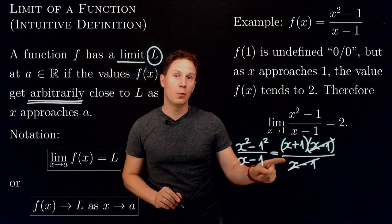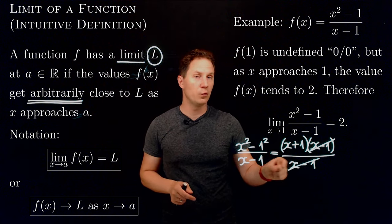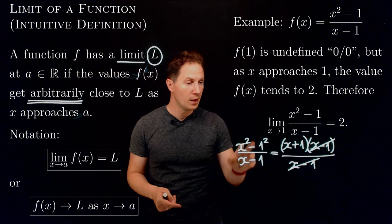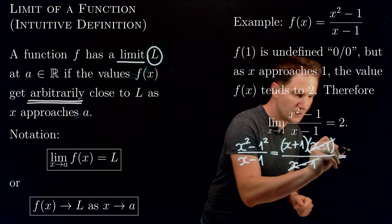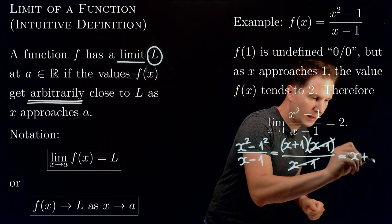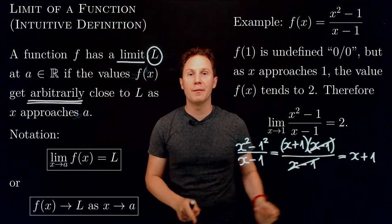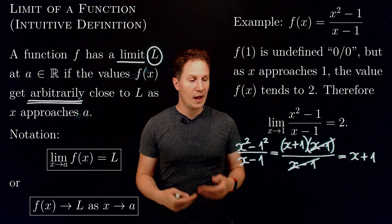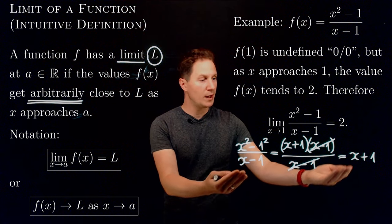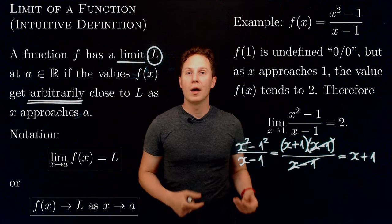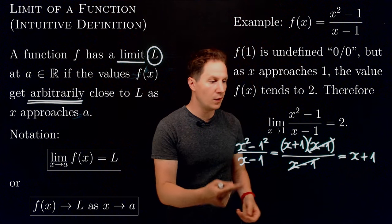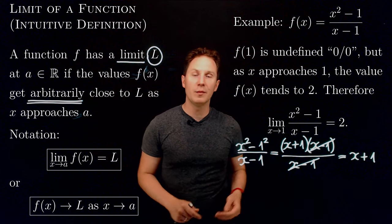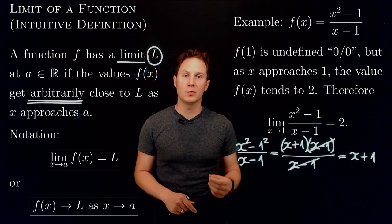That factor was the one causing the problem when we plugged in x = 1, leading to the 0/0 expression. Without it we get something much simpler: (x + 1). Since this relation holds for all x not equal to 1, as x approaches 1, x + 1 tends to 2, and hence the limit of our original function as x approaches 1 equals 2.